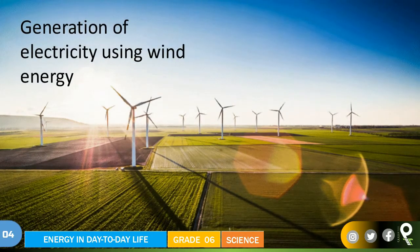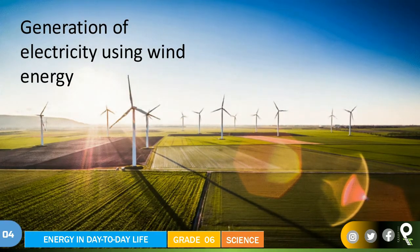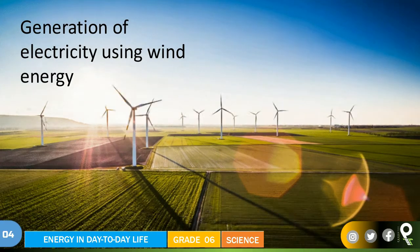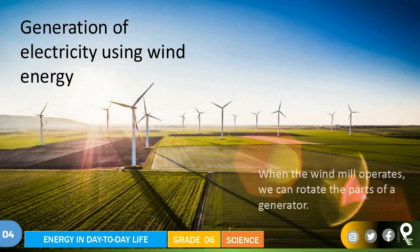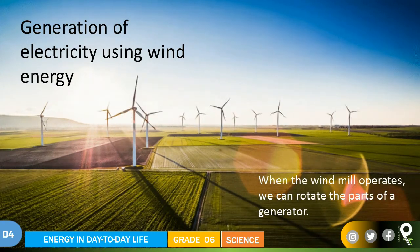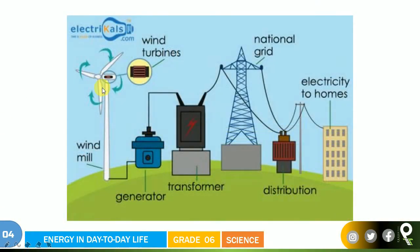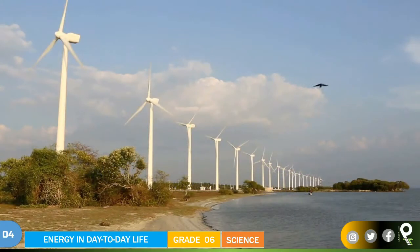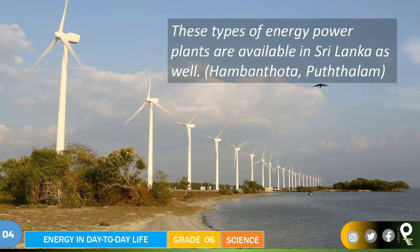Generation of electricity using wind energy is also happening. In Sri Lanka also, they use these kinds of wind propellers to generate electricity. When the windmill operates, we can rotate the parts of the generators and generate electricity. The generator will generate electricity and we can get it to our houses. These propellers — can you guess where this area is from? Yes, this is Puttalam. These types of energy power plants are available in Sri Lanka as well, in Hambantota and Puttalam.